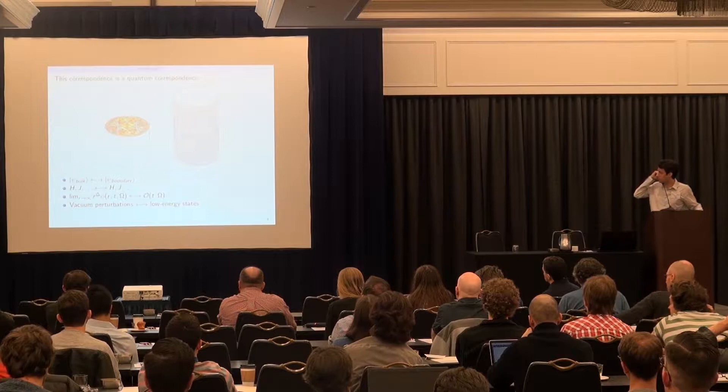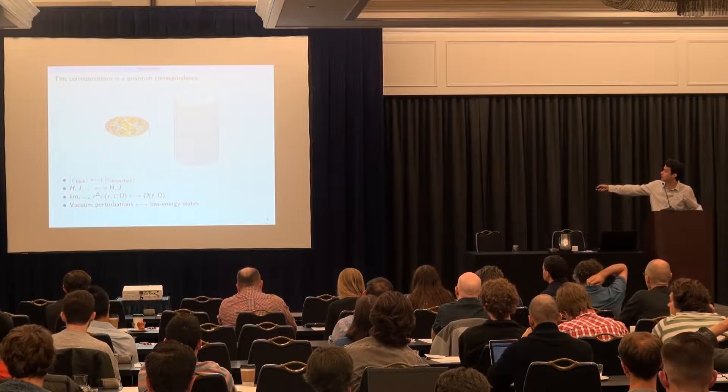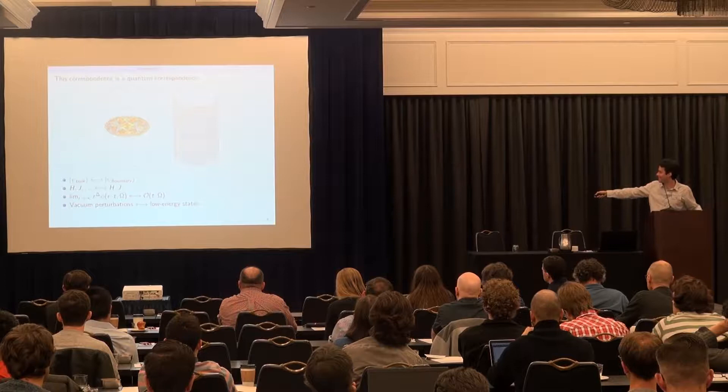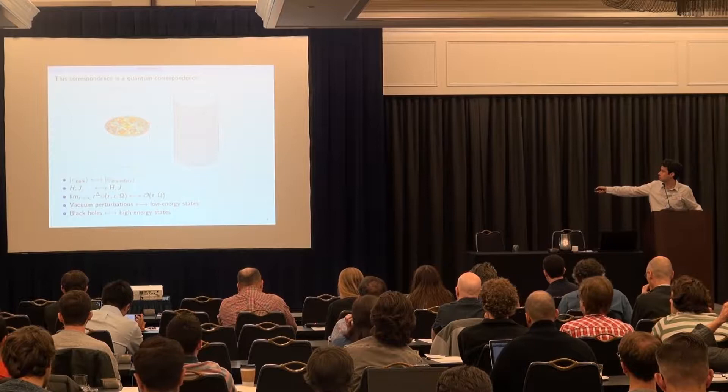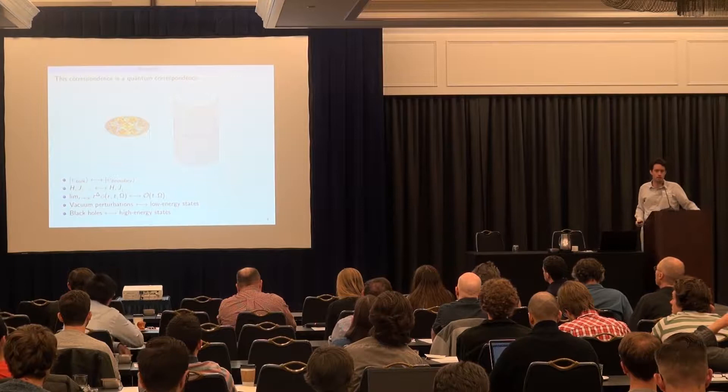Perturbations of the vacuum on the gravity side — little ripples of the Escher drawing — get mapped to low energy excitations above the vacuum in the conformal field theory. High energy states in the bulk, which mostly correspond to having some big black hole sitting in the center, get mapped to high energy excitations of the conformal field theory.